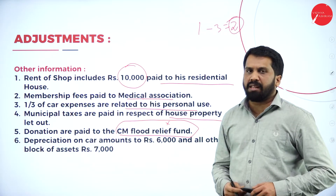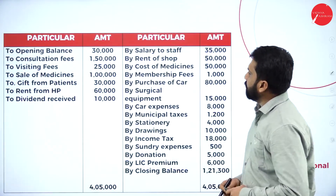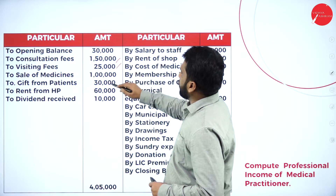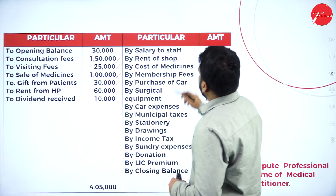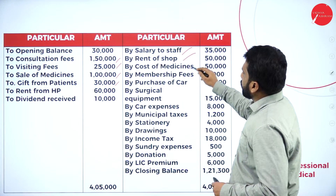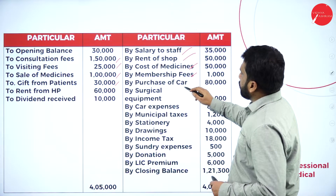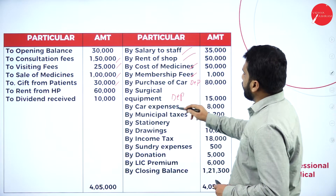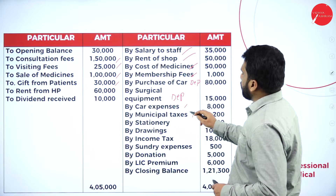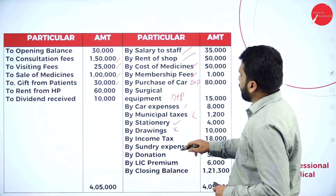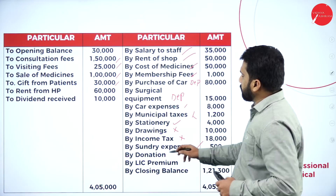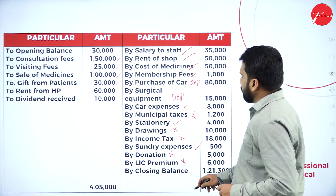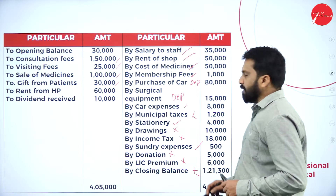Depreciation — I will come back to that later. These are the informations: consultation, visiting, sale of medicine, gift from patient. For expenses: salary, rent, cost, membership, purchase only — depreciation part for vehicle and surgical equipment, car expenses — two thirds. Municipal tax: no. Stationary: yes. Drawing: no. Income tax: no. Sundry — small expenses. Donation: personal. LIC: personal. Closing: we will not take.